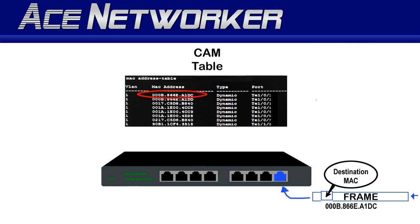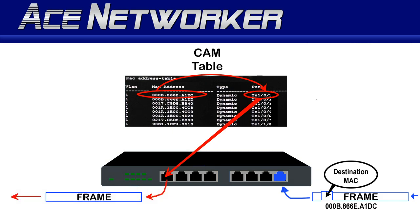The switch gets information on an interface from the device connected on that incoming interface. It then determines based on the destination MAC address in that received frame what interface or interfaces to send that information out on, by comparing the destination MAC address to its own CAM table — sometimes referred to as its MAC address table — which records all detected MAC addresses on each of its interfaces.